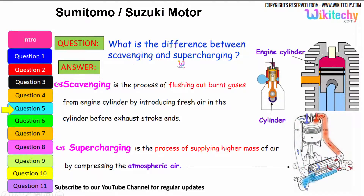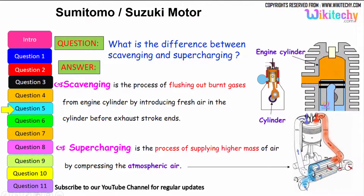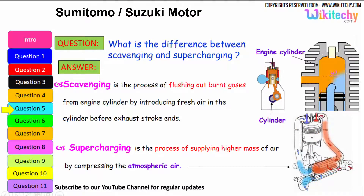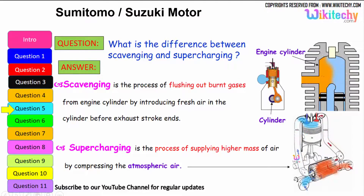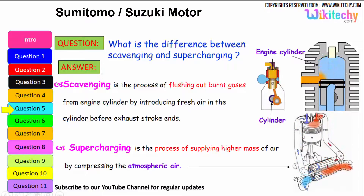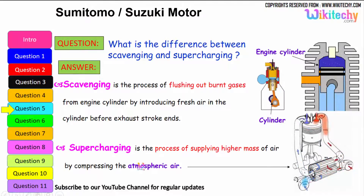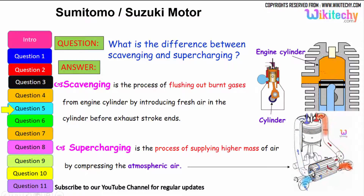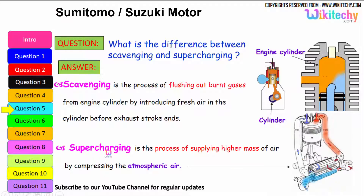What is the difference between scavenging and supercharging? Scavenging is the process of flushing out the burnt gases from the engine cylinder by introducing fresh air into the cylinder before the exhaust stroke ends. Supercharging is the process of supplying high-pressure air by compressing the atmospheric air — that is referred to as supercharging.